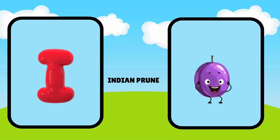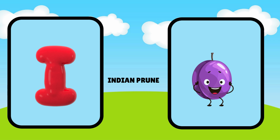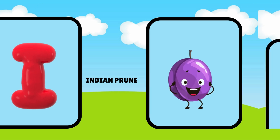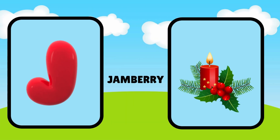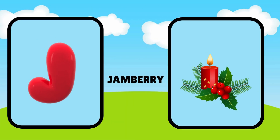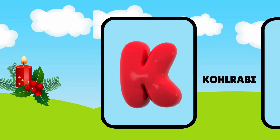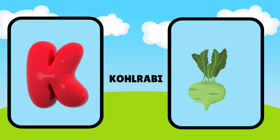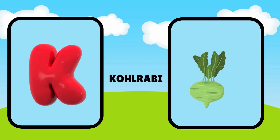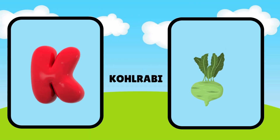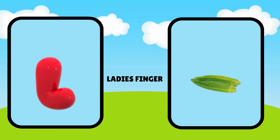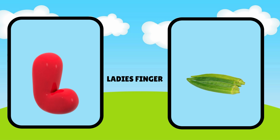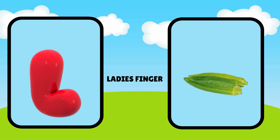I is for Indian prune, eh, Indian prune. J is for jamberry, juh, jamberry. K is for kohlrabi, kuh, kohlrabi. L is for lady's finger, luh, lady's finger.